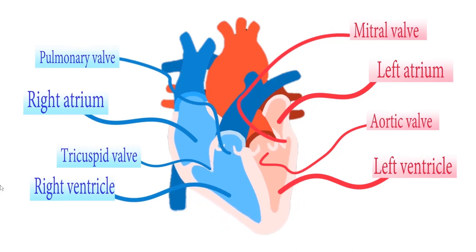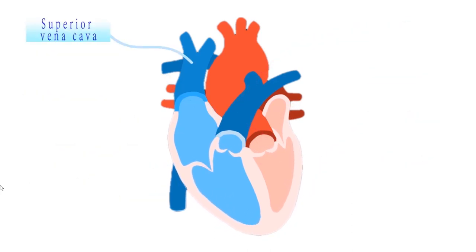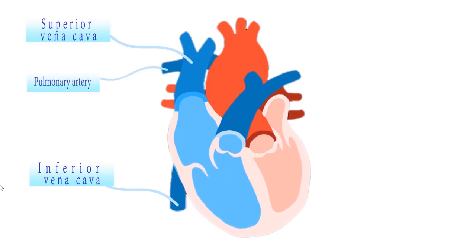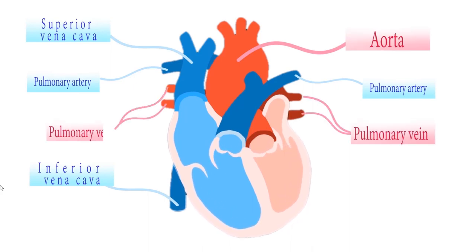The heart also has blood vessels. These blood vessels carry oxygen-rich blood and oxygen-poor blood like the superior and inferior vena cava, together with the left and right pulmonary artery, the aorta, and the left and right pulmonary vein.